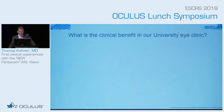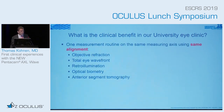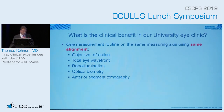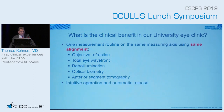What is the clinical benefit in our university? We've used this for the last several weeks and figured out that with one measurement routine on the same measurement axis using the same alignment — that's very important — you can get the objective refraction, total eye wavefront, retroillumination, optical biometry, and anterior segment tomography.